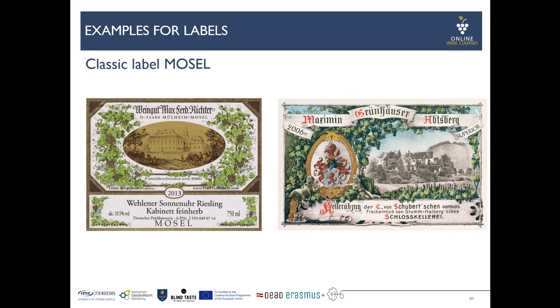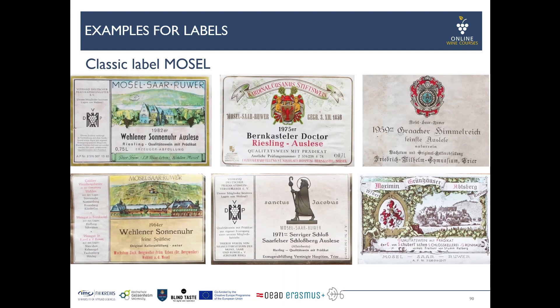Classic Mosel labels often feature an old-school building or castle, frequently for export reasons. These two labels here are good examples of that. You can also see some older labels from the 1980s, 70s, and 50s, where the older term Mosel-Saar-Ruwer still appears.